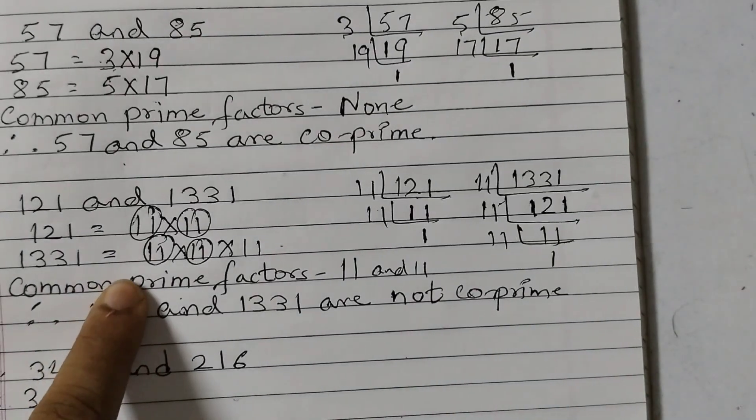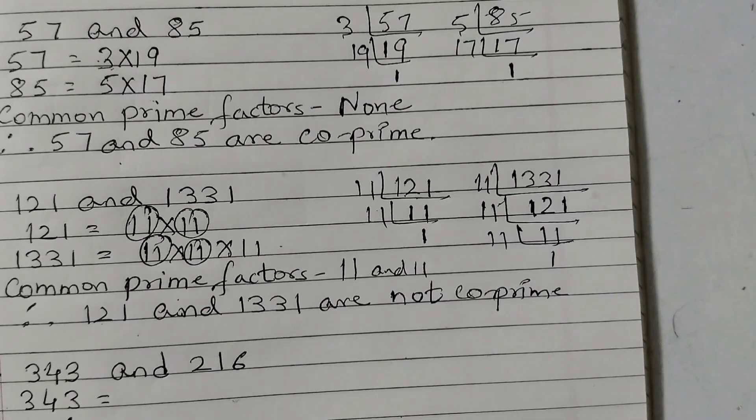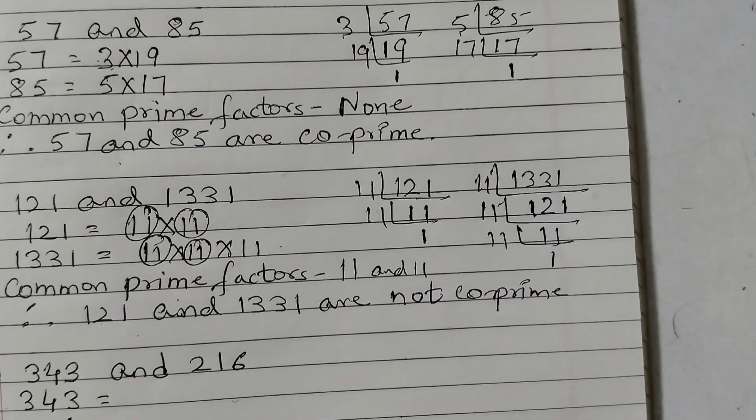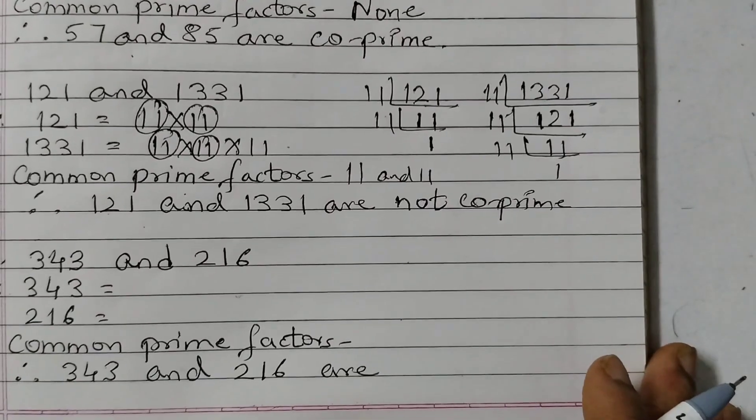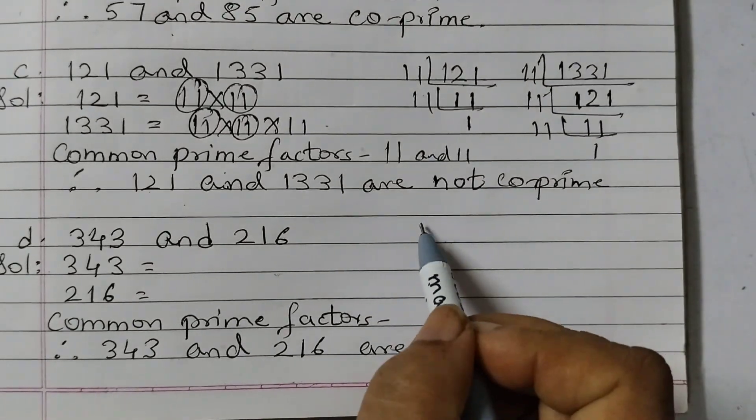If you find a common factor, the numbers are not co-prime. If you don't find any common factor, then the numbers are co-prime. Next one is 343 and 216. We will do the prime factorization.